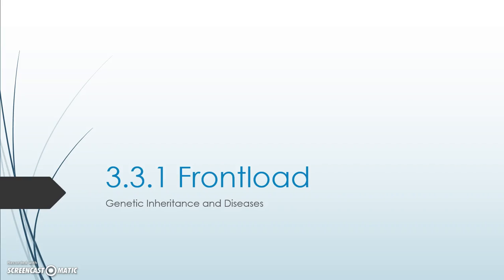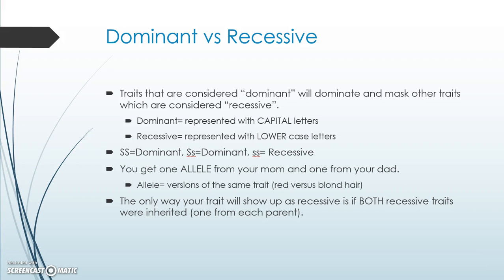This is your 3331 front load about genetic inheritance and diseases. In this activity we've talked about some definitions and terms such as dominant and recessive. Whenever you think of dominant in genetics, think of something that will dominate or mask another trait. These traits are represented by capital letters, and traits that are recessive are hidden in our DNA and are usually represented with a lowercase letter.